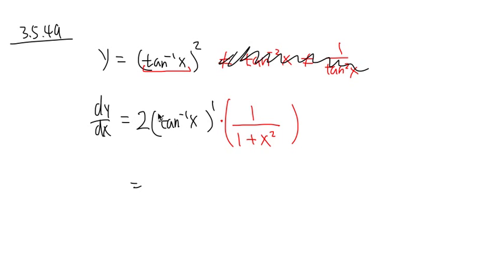We can just put things together nicely. The 2 and the inverse tangent x go on top, so the final answer is 2 inverse tangent x over 1 plus x squared.